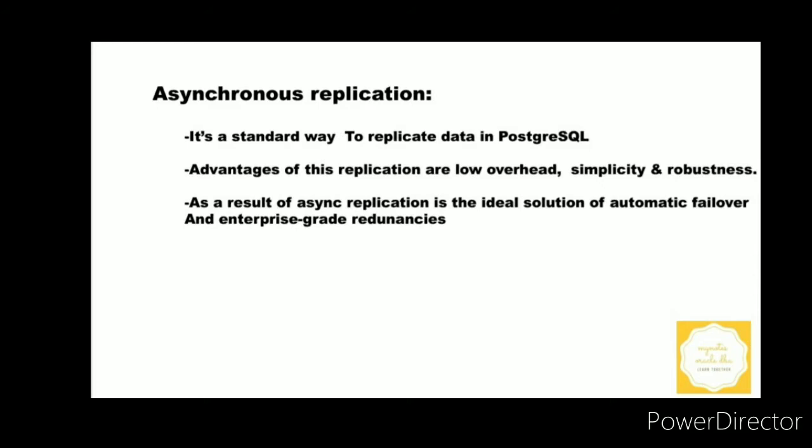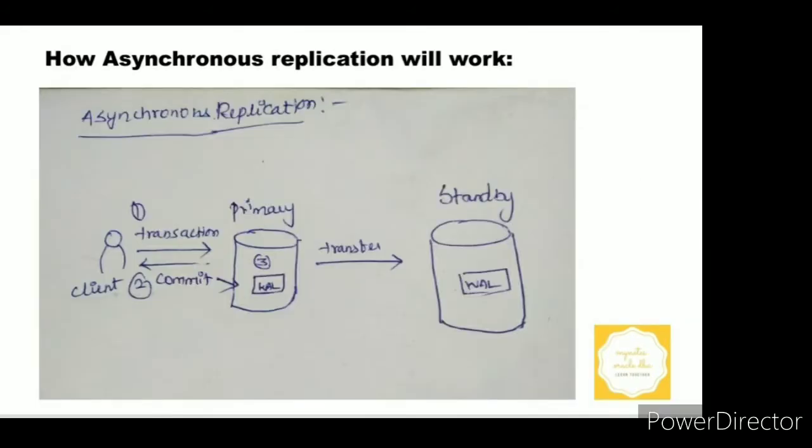We can see in detail asynchronous replication. It is a standard way to replicate data in PostgreSQL. As an advantage of these asynchronous replications are low overhead, simplicity, and robustness. As a result of asynchronous replication, it is the ideal solution for automatic failover and enterprise-grade redundancies.